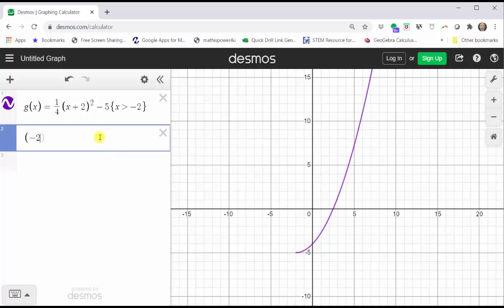open parenthesis, negative two comma negative five, close parenthesis. Let's change the color and the style. Click and hold on the black circle. Open point, purple. Click outside the menu. And now I have a very nice graph of g(x) with the restricted domain.